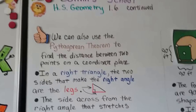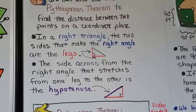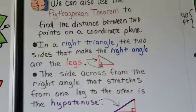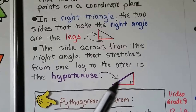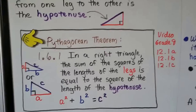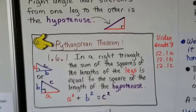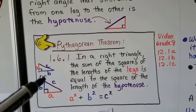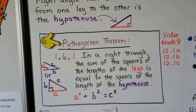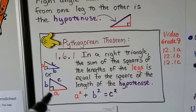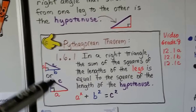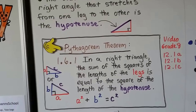We can also use the Pythagorean theorem to find the distance between two points on a coordinate plane. In a right triangle, the two sides that form the right angle are called the legs. The side across from the right angle that stretches from one leg to the other is the hypotenuse — the long side. The theorem states: a² + b² = c², where c is always the hypotenuse.